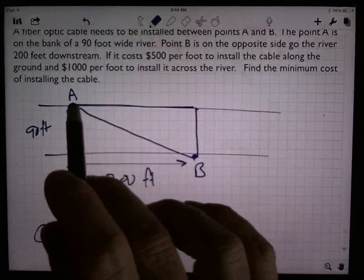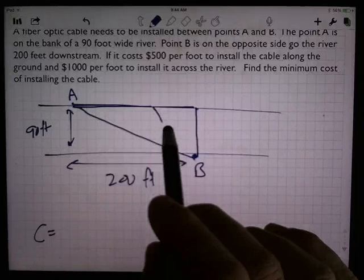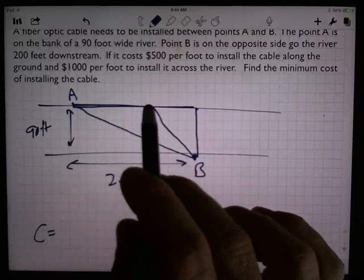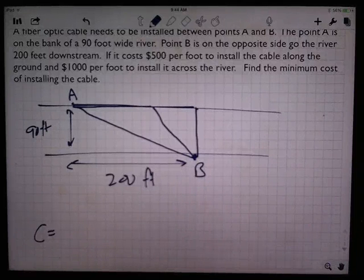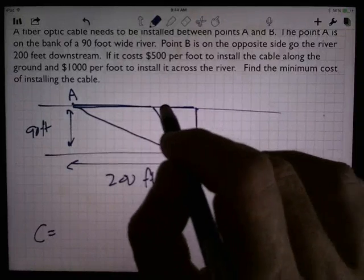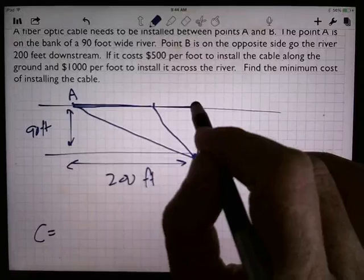Or maybe I could do something sort of in between. So go along the bank for a while and then come down here. So that starts to give me some ideas of possible things here. It looks like the variable involved, let's say,